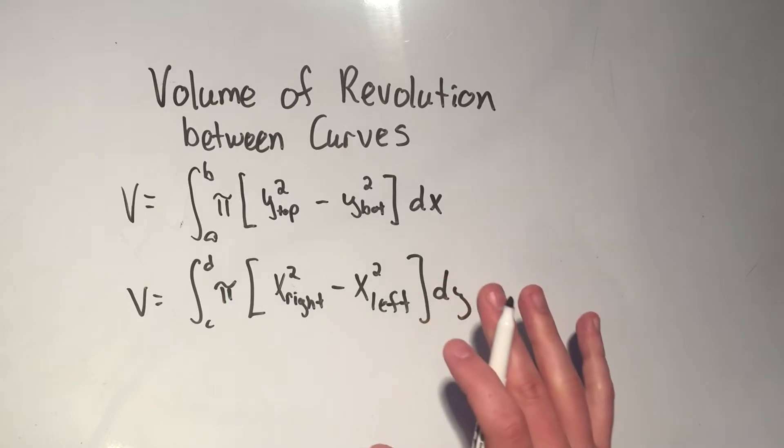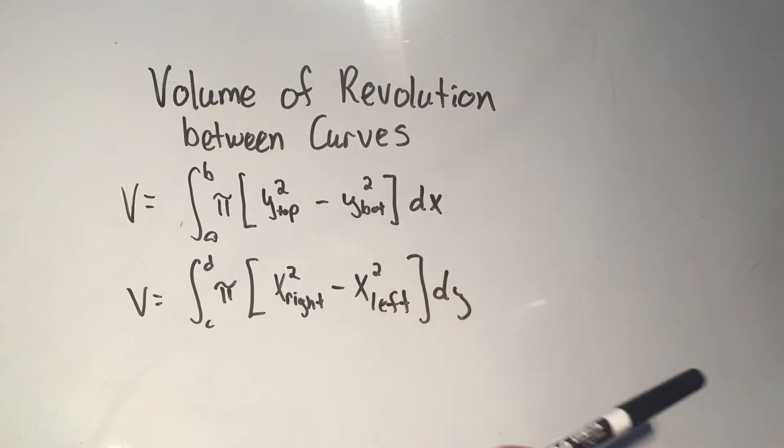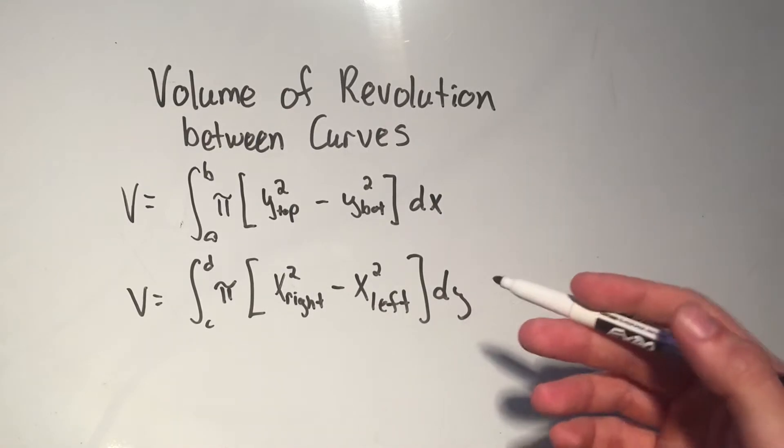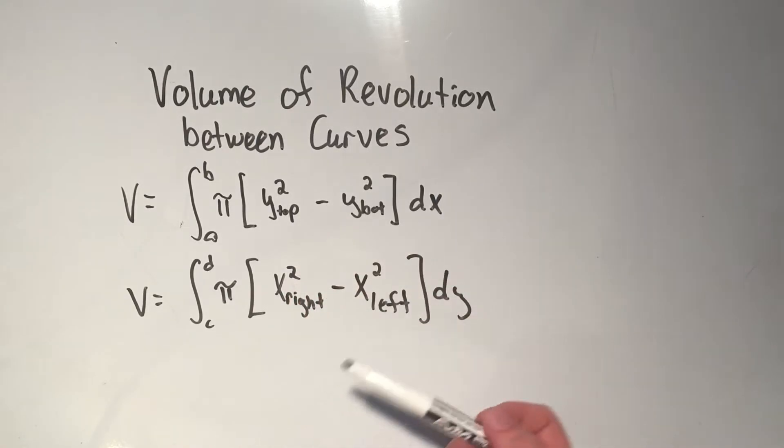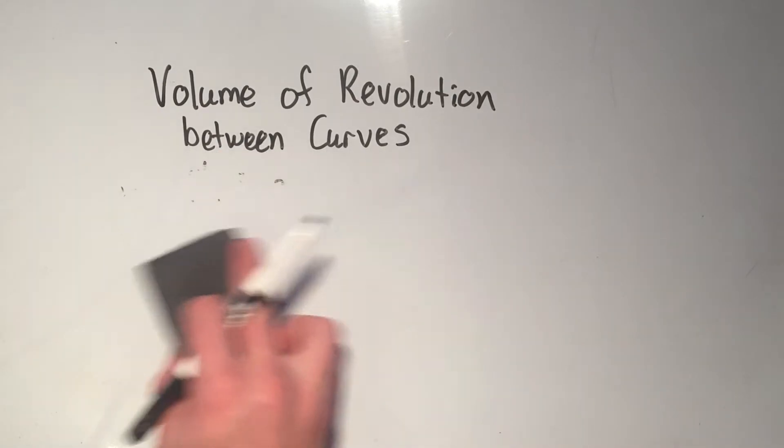So it's the same formula as the volumes of revolution. And if you haven't seen those videos yet, I have them somewhere around here. I would recommend watching them first, and then this video will make a lot more sense. All you really have to remember is you have to do the top squared minus the bottom squared or the right squared minus the left squared.